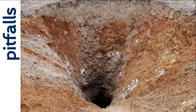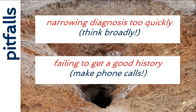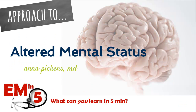A couple of pitfalls to keep in mind for altered mental status: first, don't narrow your diagnosis too quickly — this has a huge differential, so think broadly. Second, don't fail to get a good history. It's easy to say they're altered and give up, but make some phone calls and really try to get a history, which can help you determine the etiology. That's it for this week's EMN5 — thanks for joining us on the approach to altered mental status.